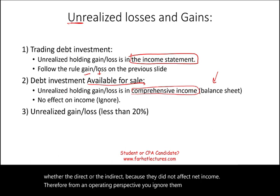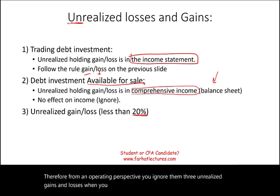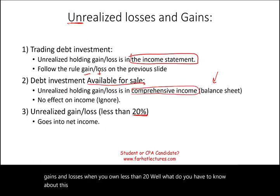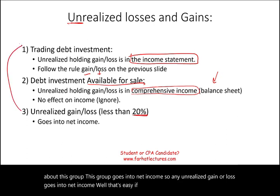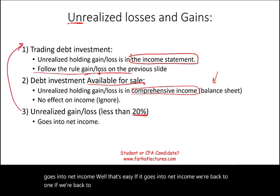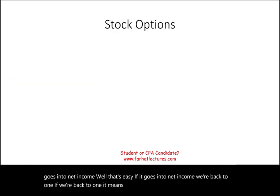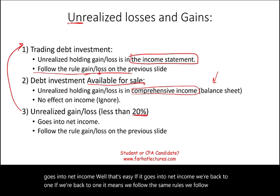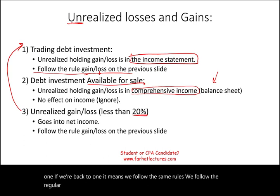Third: unrealized gains and losses when you own less than 20%. This group's unrealized gains or losses go into net income. Since they affect net income, we follow the same rules as the regular realized gains and losses we saw previously.